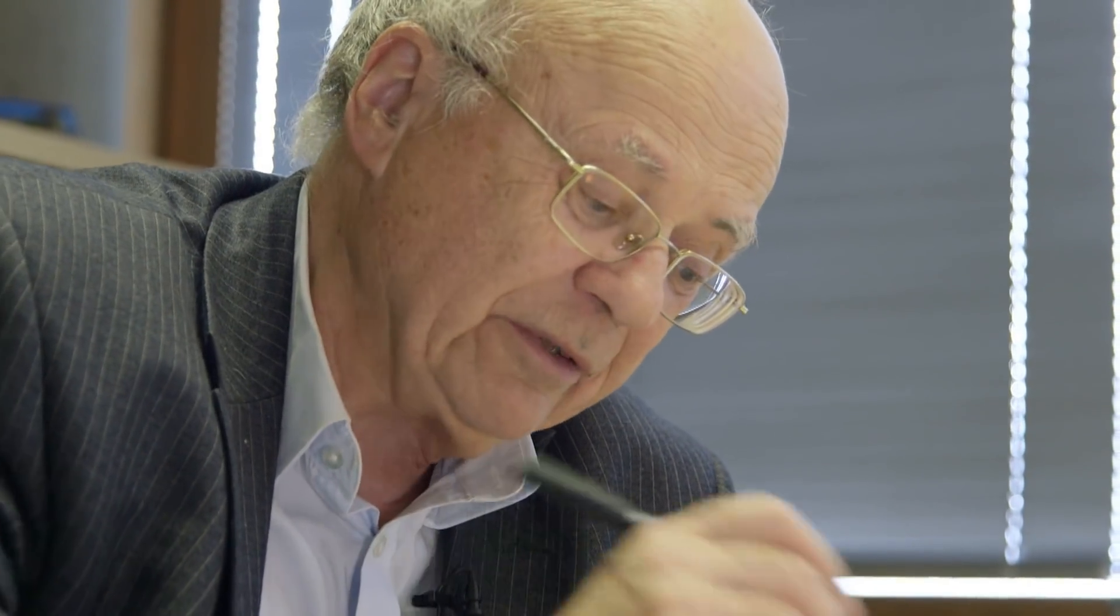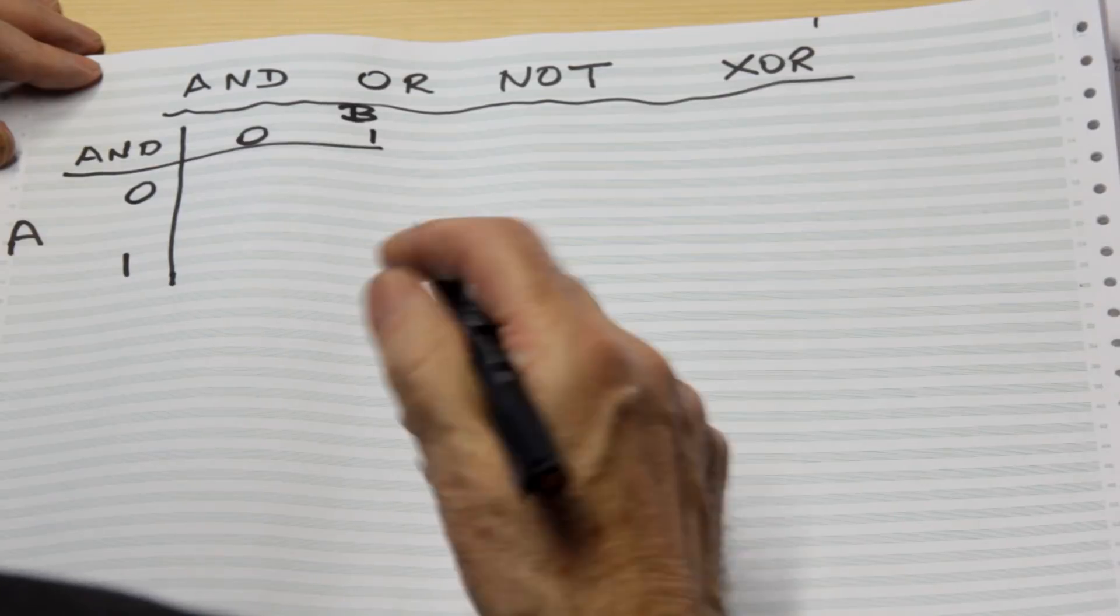It has two inputs and one output, and the output from the gate is represented inside this square area here. The A input, we're working in binary as ever, can take on values of 0 and 1, so can B. AND is very simple.